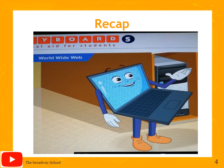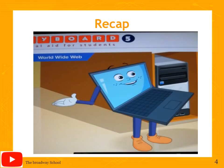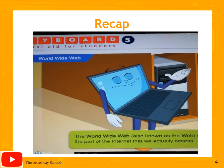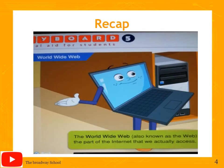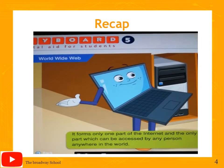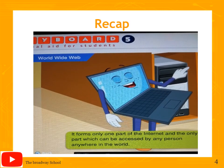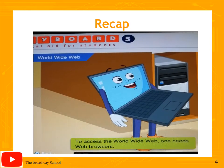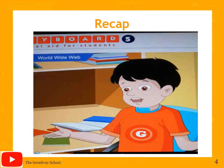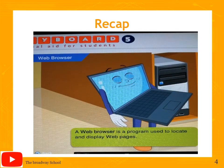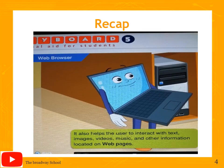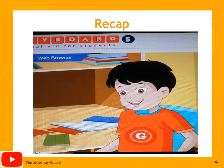Toggle explains that before using the internet, Goggle needs to know about the World Wide Web. The World Wide Web, or simply the web, is the part of the internet that we actually access. It is called a web because it is a system of billions of interlinked pages containing a variety of information. To access the World Wide Web, you need a web browser — a program used to locate and display web pages, and to interact with text, images, videos, and music.